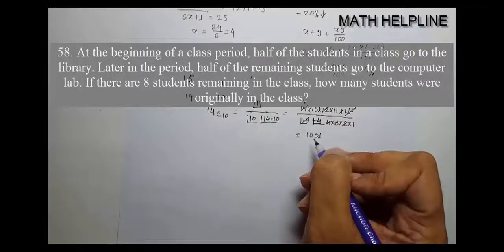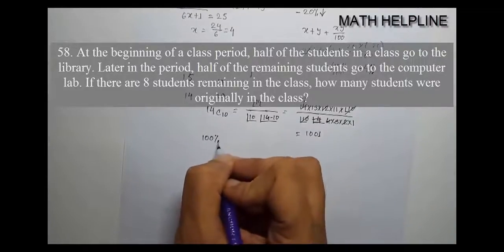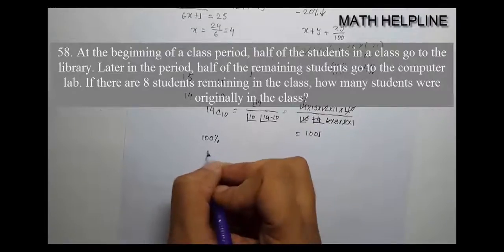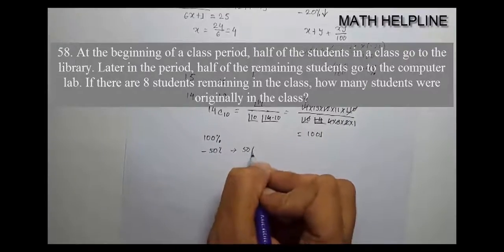Next problem: If there are 8 students remaining in the class, how many students were originally in the class? It says half the students went to the library, so 50 percent left and 50 percent remained.